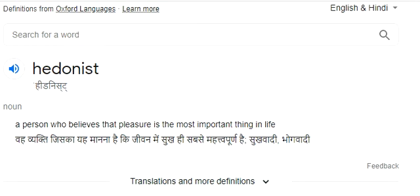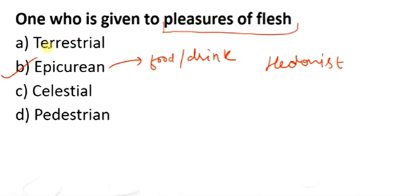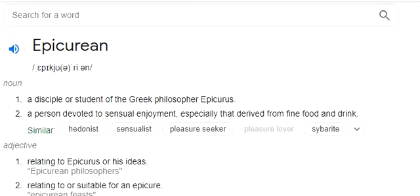So what is that person? That person is hedonist, and another thing we call it epicurean. So a person who is devoted to sensual enjoyment, especially fine food and drink, they call it epicurean.